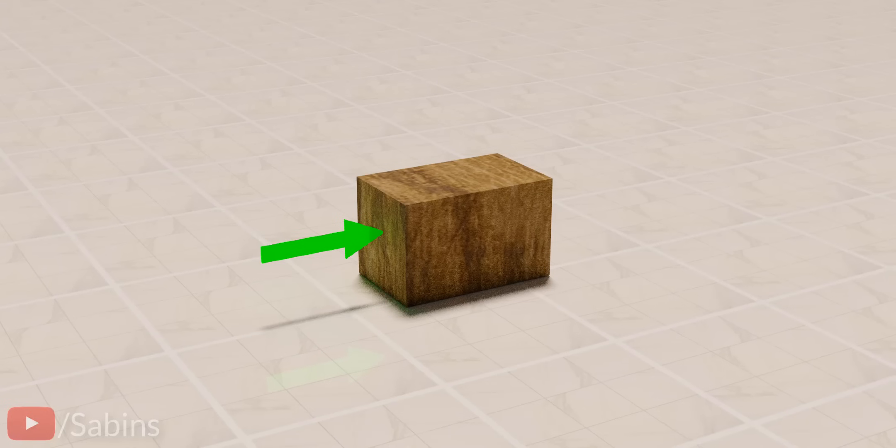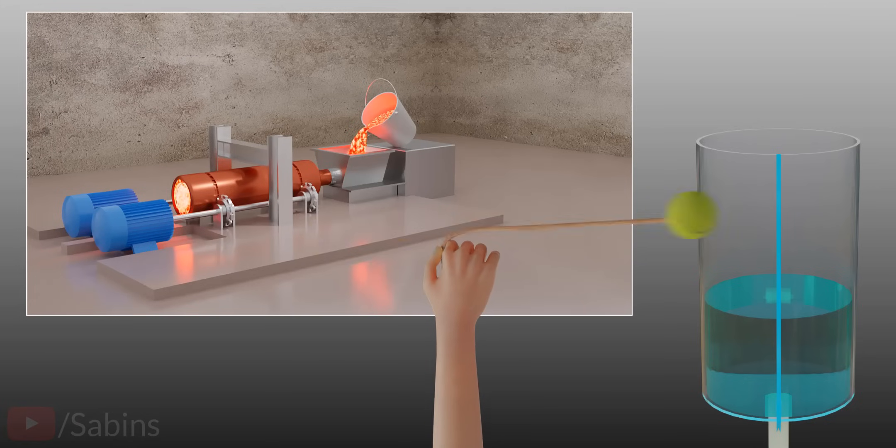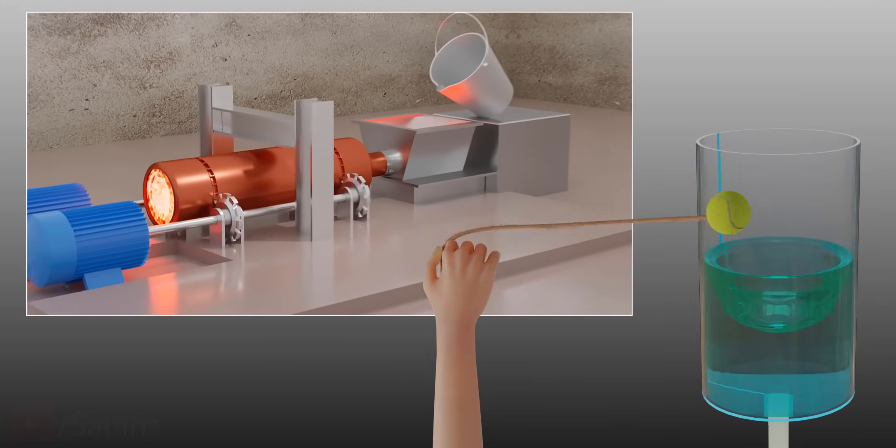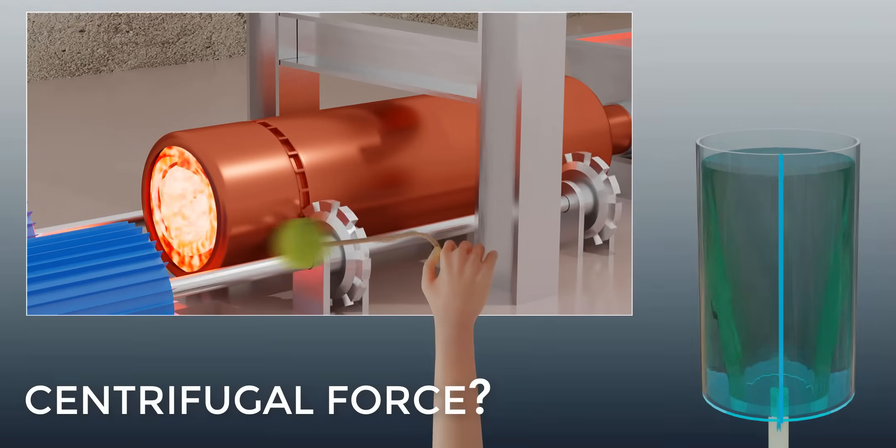In mechanics, we generally see velocity in the direction of the applied force. Why, then, is centripetal force perpendicular to the velocity? What is centrifugal force? Let's figure it out with an interesting thought experiment.